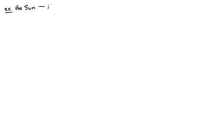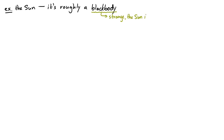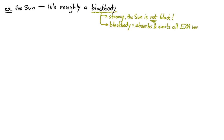For example, the sun turns out to be roughly a black body. That seems kind of strange — the sun is definitely not black when you look at it. But a black body is the term for an object which absorbs and emits all wavelengths. So the sun is roughly a black body, and we can approximate the luminosity of the sun using this idea.